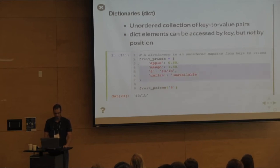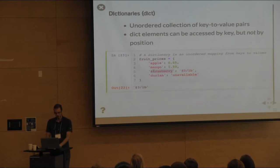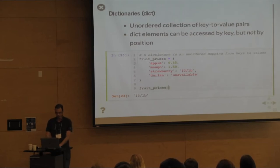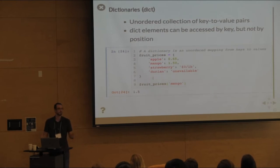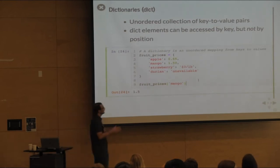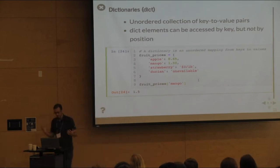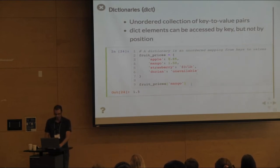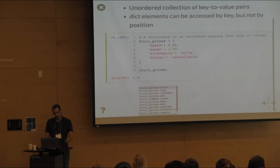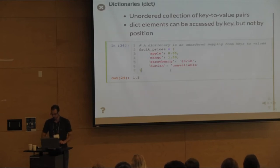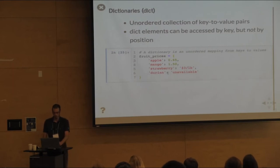If we have fruit prices stored in a dictionary and someone wants to buy a mango, we look up fruit_prices['mango'] and get 1.5. You can store as many values as you have memory for, with whatever types you want. Dictionaries are a super useful data structure that you'll see all over the place.